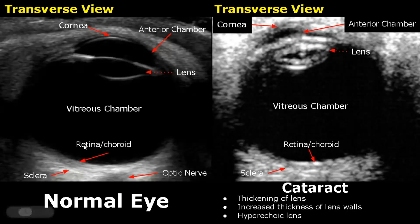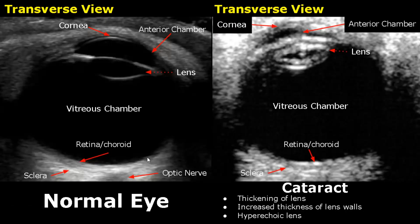The innermost layer is the retina, and just behind the retina is the choroid. Behind these two layers is the sclera — this hyperechoic bright layer. And finally, this hyperechoic area is the optic nerve.